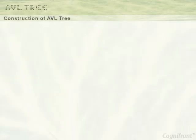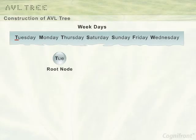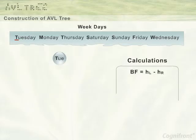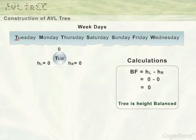Let us consider an example to understand the process of constructing a height balanced tree. Here we insert the weekdays in a given sequence. The first element is Tuesday, which becomes the root node. The balance factor of this node is 0, since the height of both the left and right subtrees is 0. Therefore the tree is balanced.